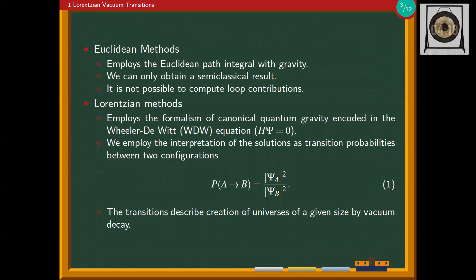These transitions are described by nucleation of true vacuum bubbles in the background of the false vacuum. They have been studied by Euclidean methods in the 1980s using a Euclidean path integral with gravity, but one limitation is that we can only obtain semi-classical results — it is not possible to compute quantum corrections. We employ a Lorentzian method using the Wheeler-DeWitt equation, which is the quantum mechanical version of the classical Hamiltonian constraint. We have a wave function of the universe and use the ratio of two solutions as transition probabilities between two configurations.